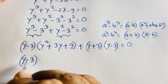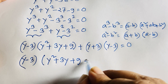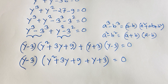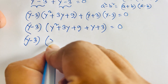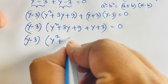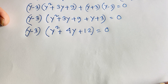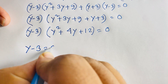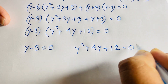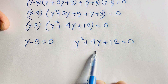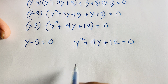Now (y minus 3) is common. Factoring it out: (y minus 3) times (y² + 3y + 9 + y + 3) equals 0, which simplifies to (y minus 3) times (y² + 4y + 12) equals 0. So we have two cases: Case 1: y minus 3 equals 0. Case 2: y² + 4y + 12 equals 0, which is a quadratic equation.